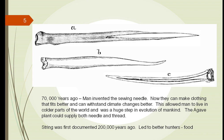Early on, plants were used for food, and also for clothing. One of our earliest inventions was the sewing needle. How did humans, at the time, learn to take the skins from animals and wear them as clothing, and how did they learn to keep the pieces of skin together? Well, it was because of a plant. They discovered that they could take the sharp tip of a plant, make a needle out of it, and bring two hides together to make clothing.